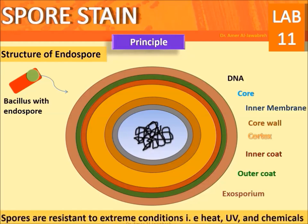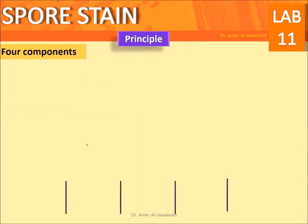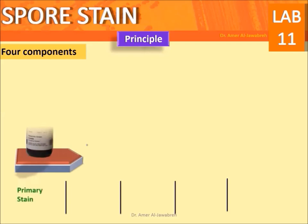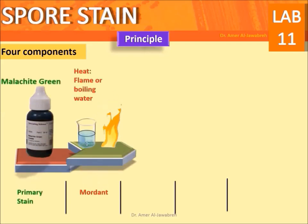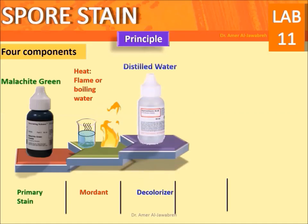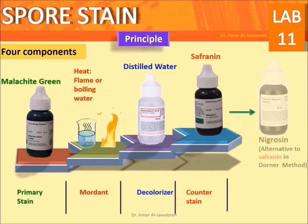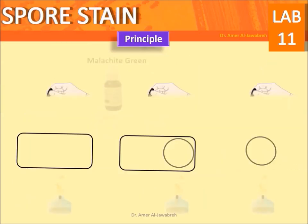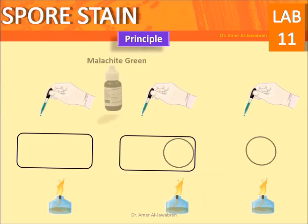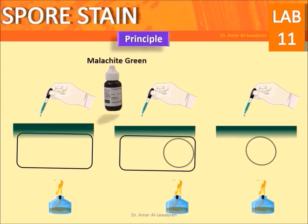The four components used in this stain are: primary stain — malachite green; mordant — heat (flame or boiling water); decolorizer — distilled water; and counterstain — safranine, or an alternative to safranine in the Dorner method.